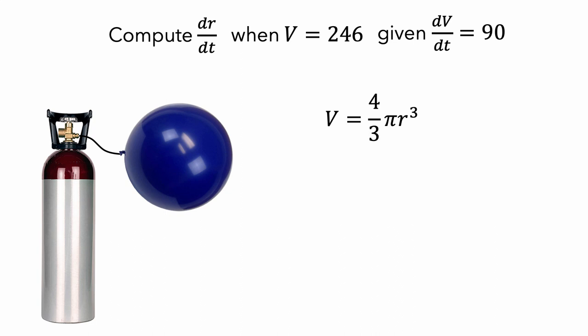This formula alone doesn't tell us values of the instantaneous rate at which the radius of the balloon is changing, because the formula relates the values of the balloon's volume and its radius, not the instantaneous rates at which these quantities vary with respect to time. So in order to answer our question, we need a formula that relates dr/dt and dv/dt.